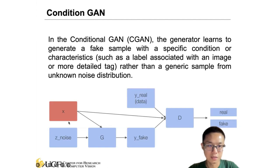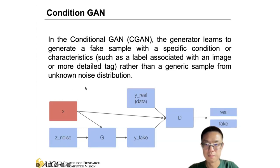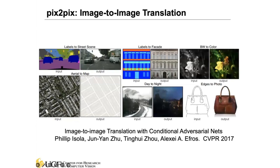This condition will add in some constraints, not just starting from the noise, but we want to add in some conditions so that the generated image will fit some specific needs. Here's a couple of examples we can use in the conditional GAN. This label map can be considered as a condition.